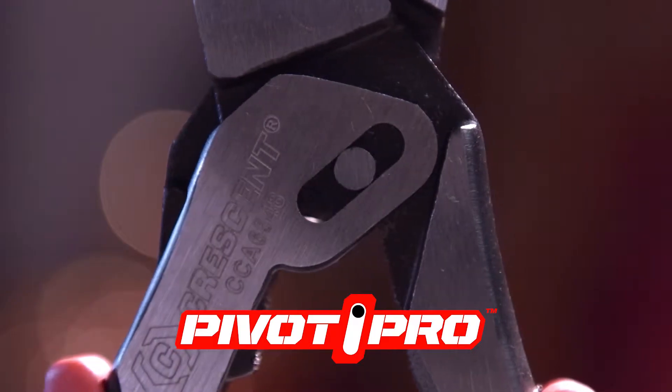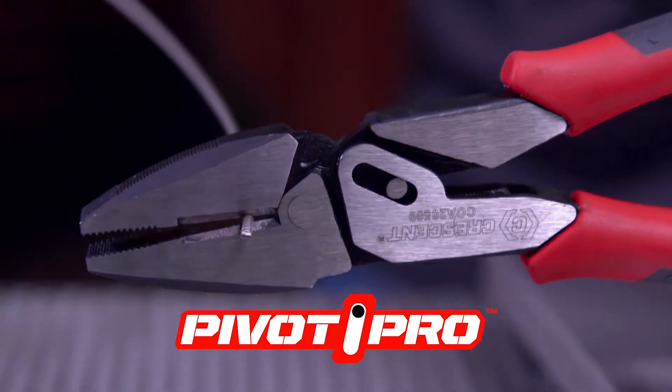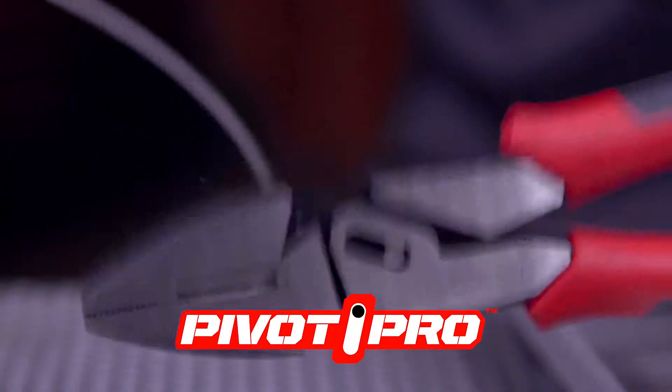Pivot Pro's unique design delivers a more efficient transition of power from the handle to the jaws, making the same cut with an average of 35 pounds of force.